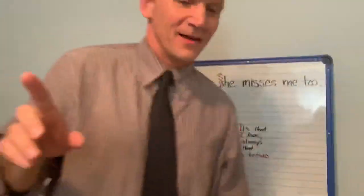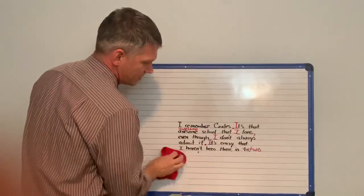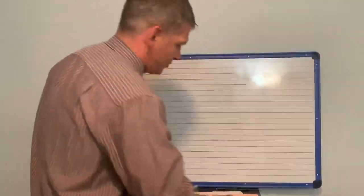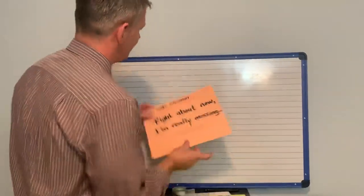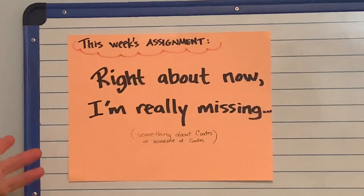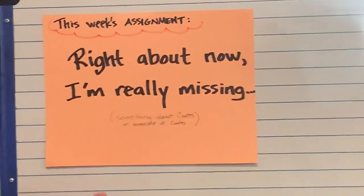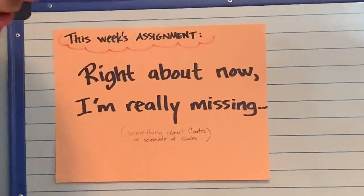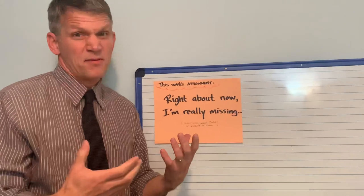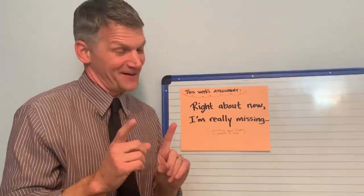Good. Now let's get into our actual lesson for this week. Warm-up complete. You've got to do those warm-ups because when you start your own writing, you're probably going to make some of those mistakes too, and we've got to get into the habit of checking them. The assignment starts today and goes through Friday. Your writing assignment is going to start with this phrase: 'Right about now, I'm really missing...' My rule is it has to be something about Coates, or someone at Coates — your teacher, a specials teacher, a friend, or something that's not a person, something cool. It could be your desk, something about school that you're missing right about now. That's the assignment.